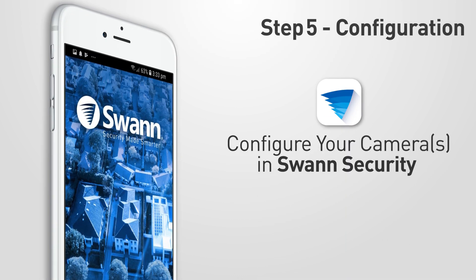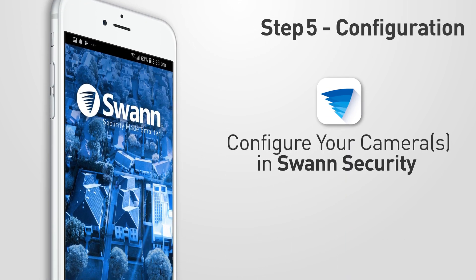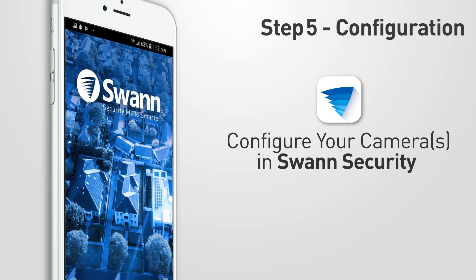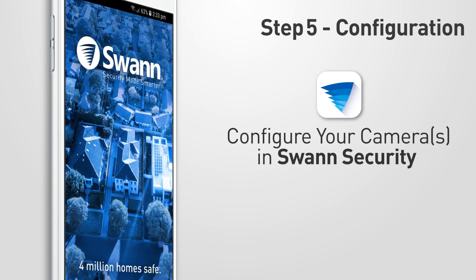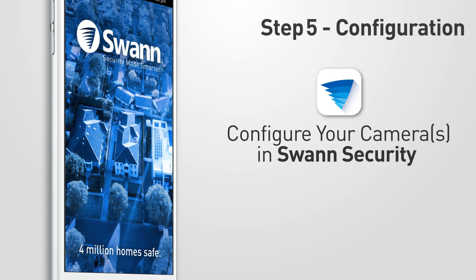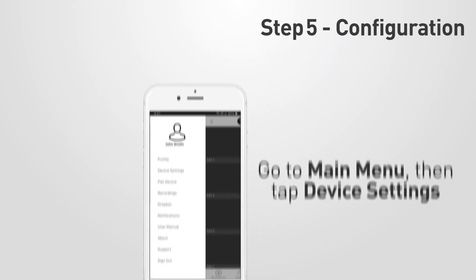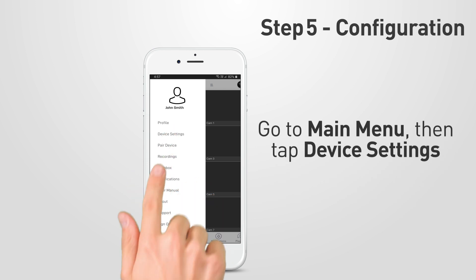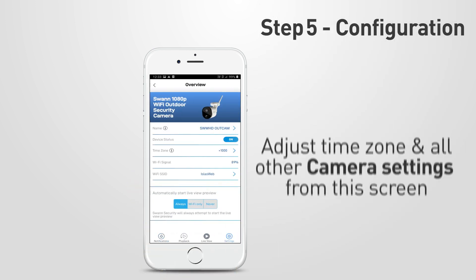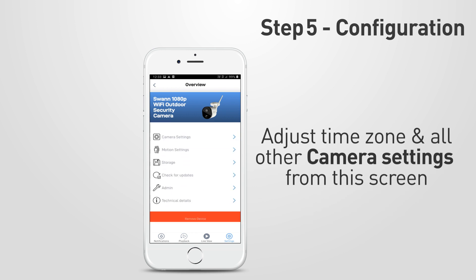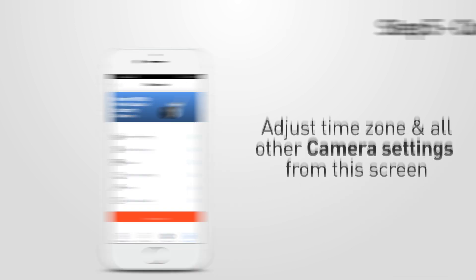Step 5 is configuring your camera or cameras within the Swan Security app. You can make your cameras appear how you want within the app, including changing the camera name, time zone, motion detection settings and more. Go to the main menu, then tap Device Settings. Tap on the camera you wish to change the settings for. Adjust the time zone and all other camera settings from this screen. That's it. Now you're ready to use your camera and take advantage of the complete Swan Security app ecosystem.